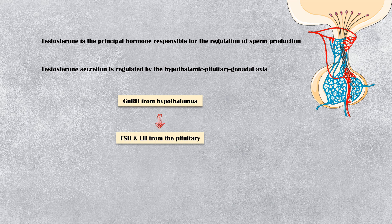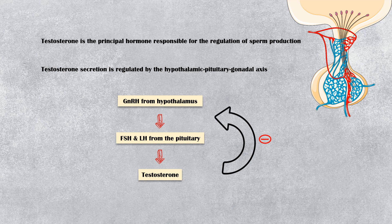Out of these two, LH hormone is the one which stimulates the testis to produce testosterone. When there is excess testosterone synthesis, the hormone itself acts on the hypothalamus to reduce LH secretion, and thereby reducing excess testosterone production. This is called the negative feedback mechanism of androgen secretion.